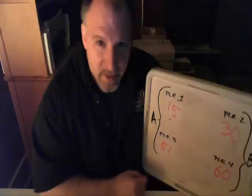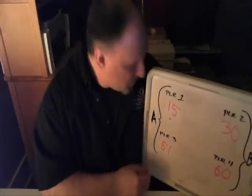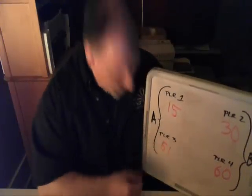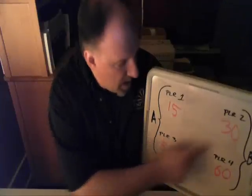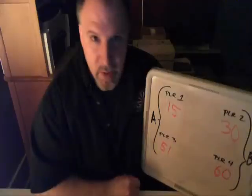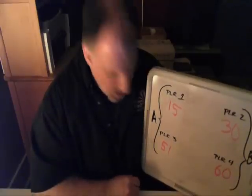Player 1 is up. He's got 15. He can throw his 15 and go out because his partner's got 51, and the combined score of his opponents is 90.